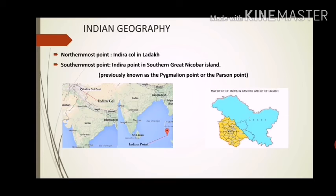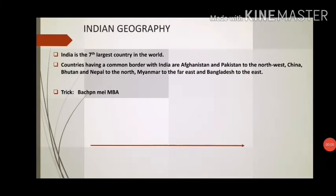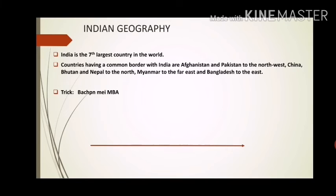The southernmost point of India is Indira Point, located in the Great Nicobar Island. This point is named after our late Prime Minister Indira Gandhi. Before that, it was known as Pygmalion Point or Parsons Point.